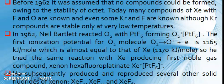So, chemistry of noble gases. Before 1962, it was assumed that no compounds could be formed owing to the stability of the octet. Today, many compounds of Xenon with fluorine and oxygen are known, and even some krypton and fluorine are known, although krypton compounds are stable only at very low temperatures.